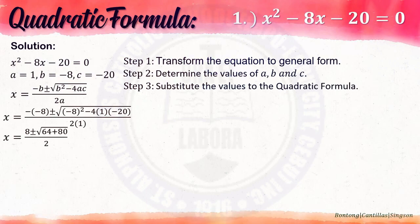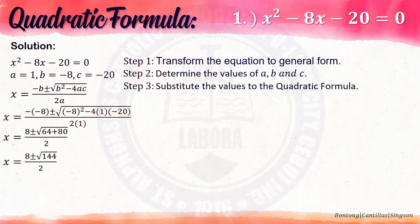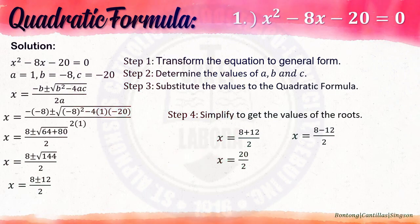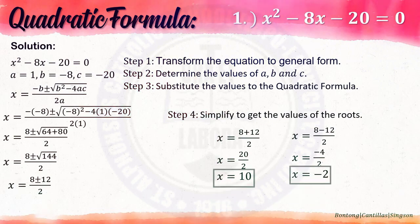Simplifying: negative of negative 8 is 8. Negative 8 squared is 64. Negative 4 times 1 times negative 20 is positive 80. And 2 times 1 is 2. 64 plus 80 is 144. So x equals 8 plus or minus square root of 144 over 2. The square root of 144 is 12. So x equals 8 plus or minus 12 over 2. Separating: x equals 8 plus 12 over 2, and x equals 8 minus 12 over 2. 8 plus 12 is 20, divided by 2 is 10. 8 minus 12 is negative 4, divided by 2 is negative 2. So the values of x are 10 and negative 2.